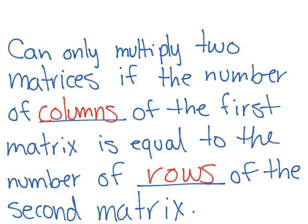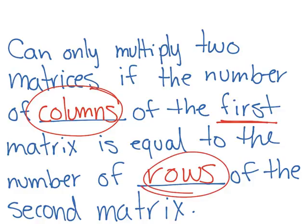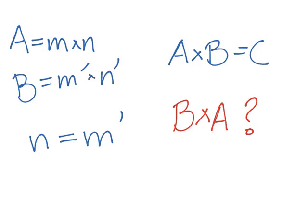Remember that you can only multiply two matrices if the number of columns of the first matrix is equal to the number of rows of the second matrix. As a memory aid, remember that in the alphabet, first comes C then R — so the first matrix's columns must equal the second matrix's rows.